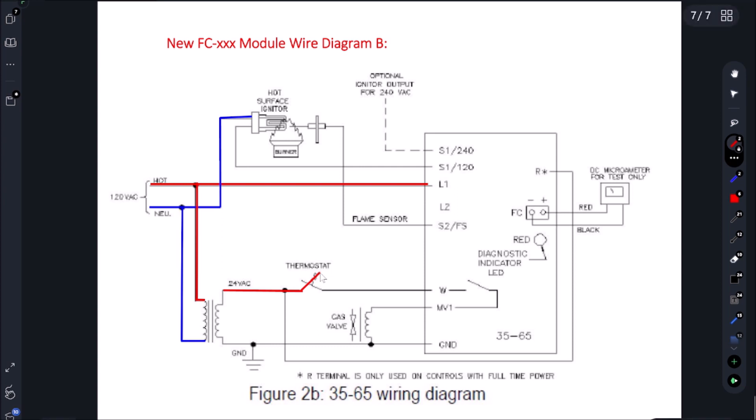That's why we don't use the thermostat. That's going to make the W terminal hot as soon as we turn that toggle switch to the on position. Our neutral is going to come directly to our gas valve, so our gas valve always has our neutral.